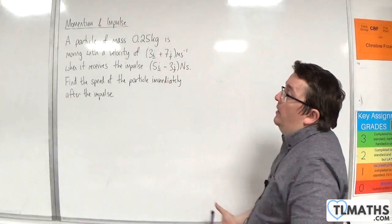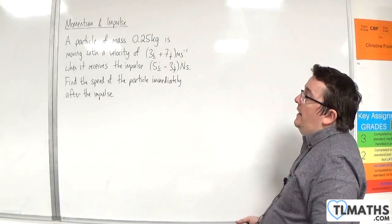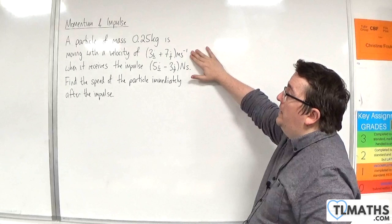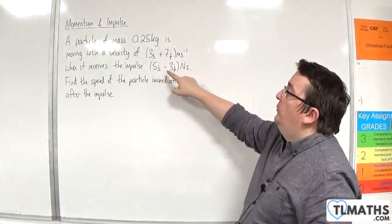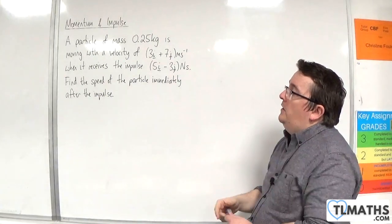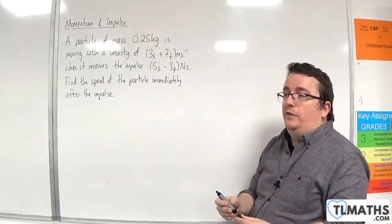In this video, we have a particle of mass 0.25 kg moving with a velocity of 3i + 7j meters per second when it receives the impulse 5i - 3j newton seconds. Find the speed of the particle immediately after the impulse.